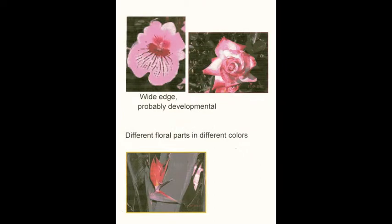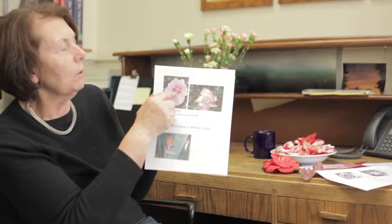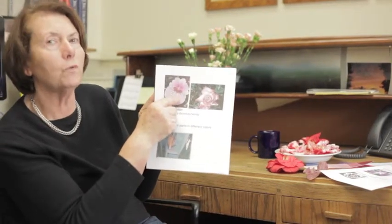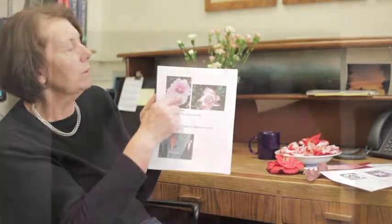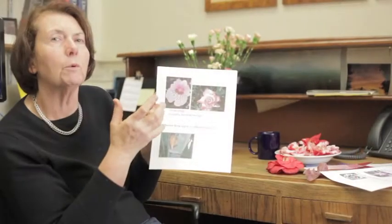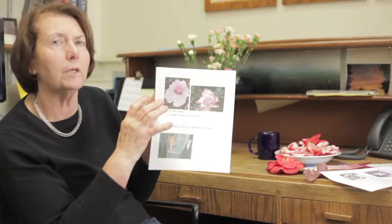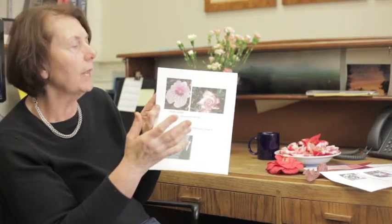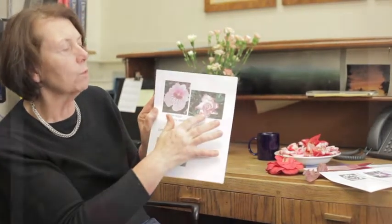Other common patterns are much more complicated, like this orchid flower, where there are two different colors of pigment. There's a reddish-brown pigment including a complicated set of dots, and then a true pink. So the plant is able to make two different colors of anthocyanin depending on where you are in the flower. And in this rose, we see that the edges of the petals are bright pink, but the bulk of the petal is white.